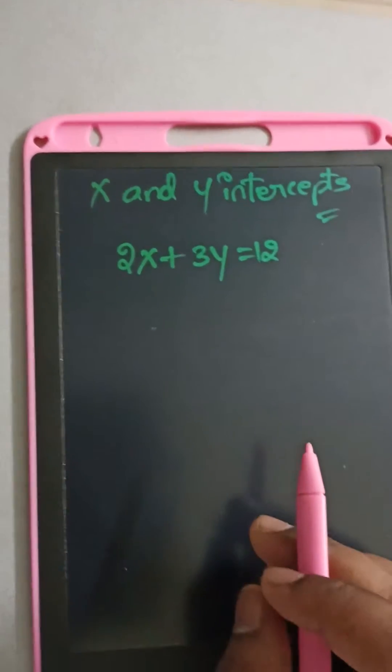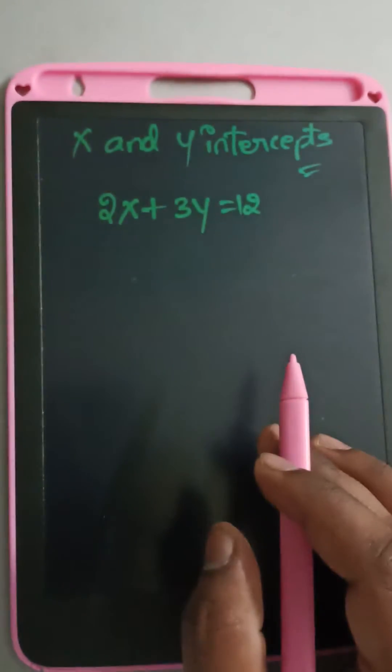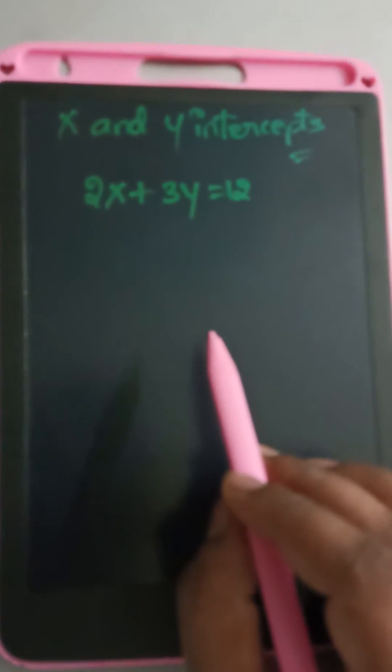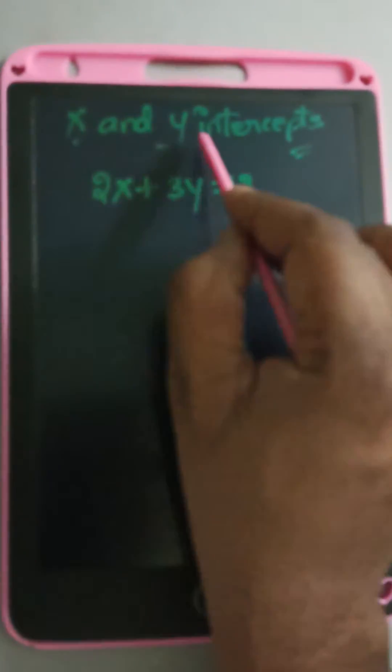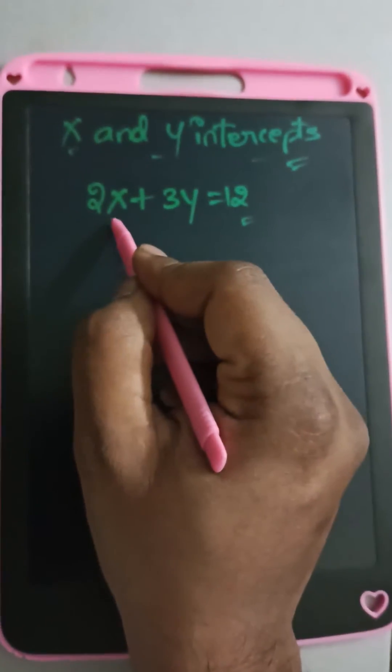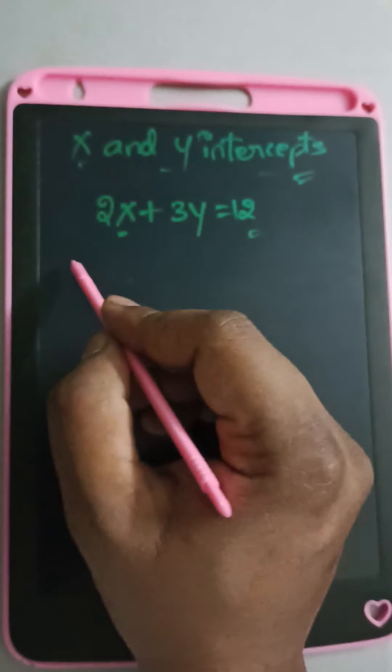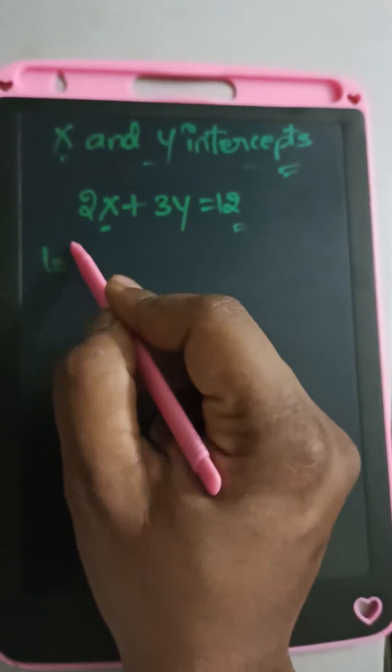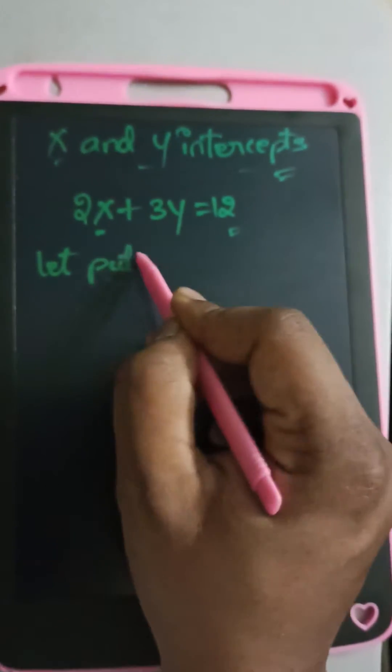So students, in this question we were requested to find the x and y intercept values through this equation. Now let's resolve this. Firstly, let's find out the intercepts by putting the value of x equal to 0.